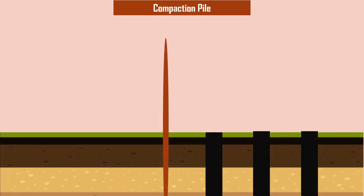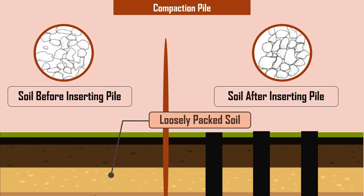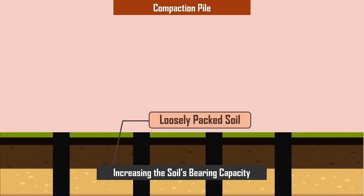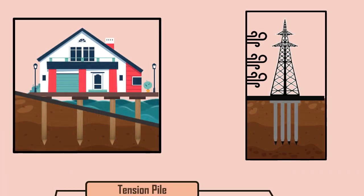Compaction piles: these types of piles are used to closely pack, i.e. compact, the loose granular soil, thereby increasing the soil's bearing capacity. The pile itself does not carry any load, so it is made of weak material.